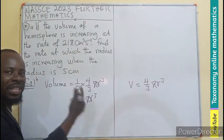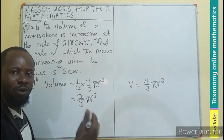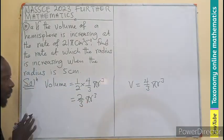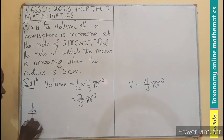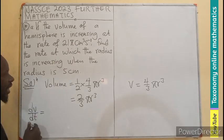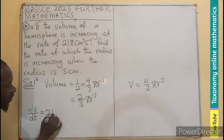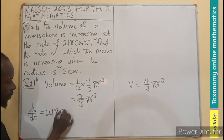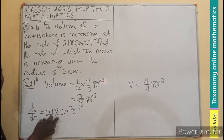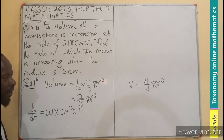So this volume is changing with time. That is also a differentiation with respect to time. So in this case, we are going to have dV/dt equals to the rate of change that has been given to us as 21π cm³ per second. So this is the rate of change.